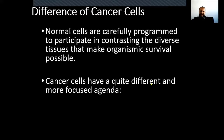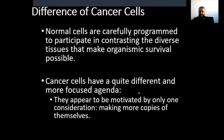Cancer cells have a quite different and more focused agenda. Cancer cells appear to be motivated by only one consideration: making more copies of themselves. Unlike normal cells, cancer cells don't care about tissue architecture, organ architecture, or organ function — they just divide. This interferes with tissue and organ architecture, causing changes that disturb the function of the organ. That is the basic problem with cancer.